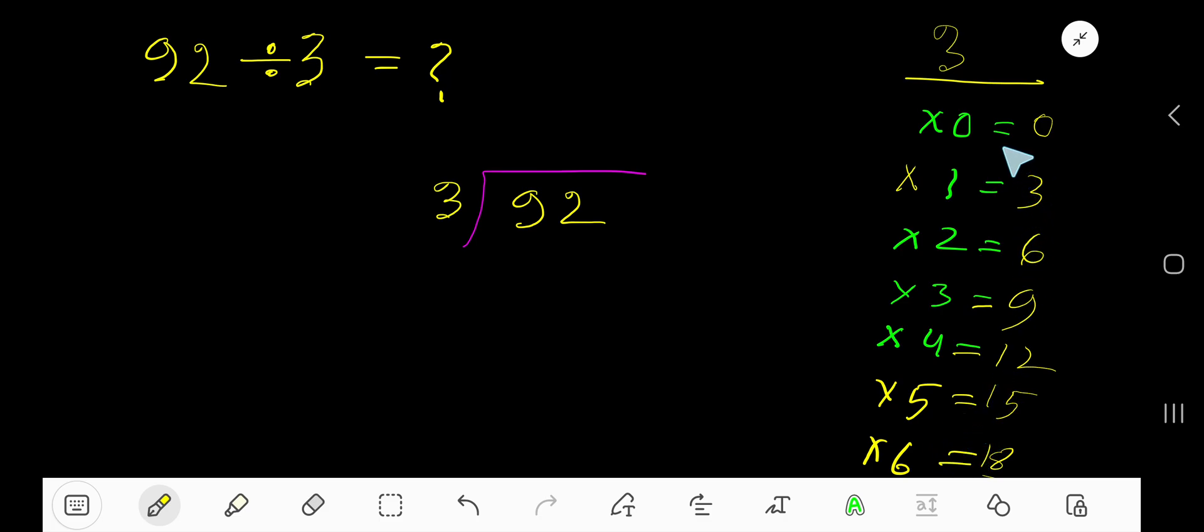To find out the multiplication table of 3 just add 3 with the previous step. 0 plus 3, 3. 3 plus 3, 6. 6 plus 3, 9. 9 plus 3, 12. 12 plus 3, 15. 15 plus 3, 18.